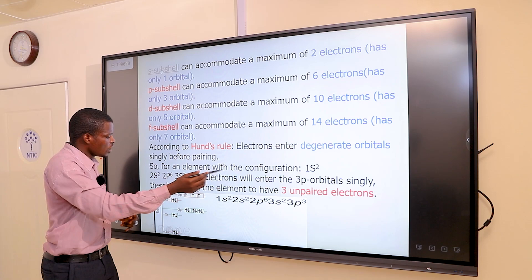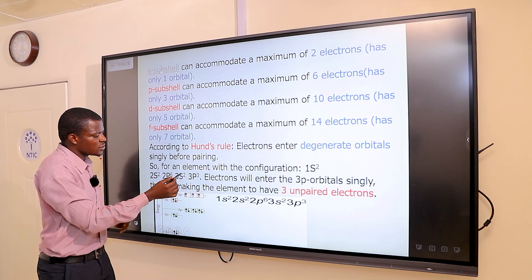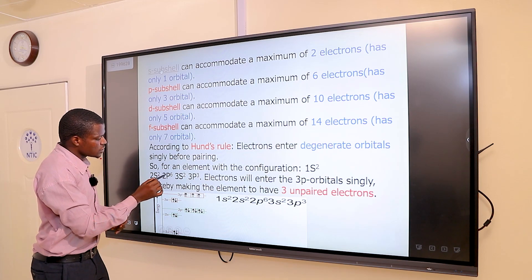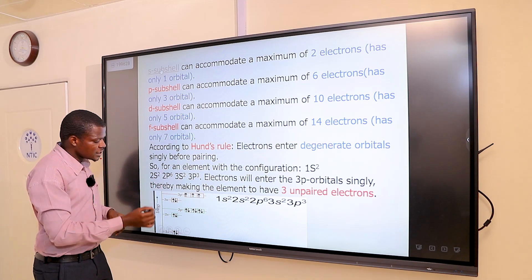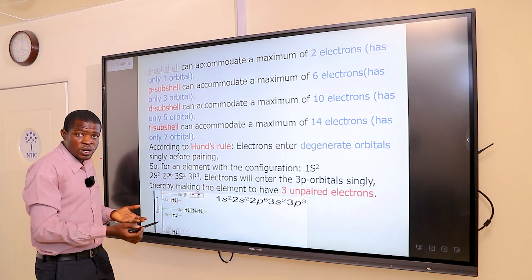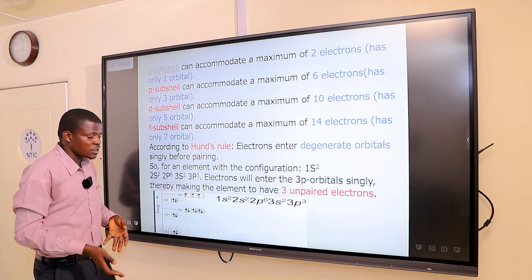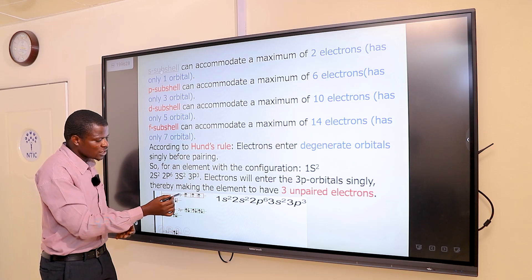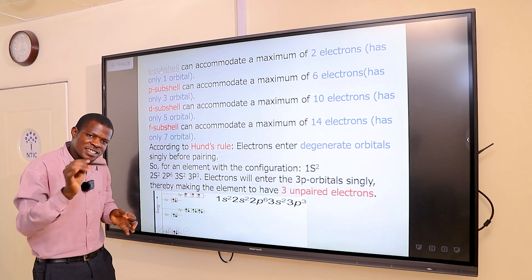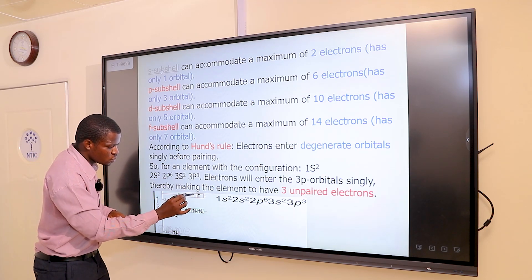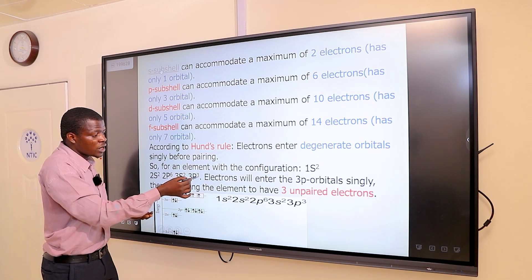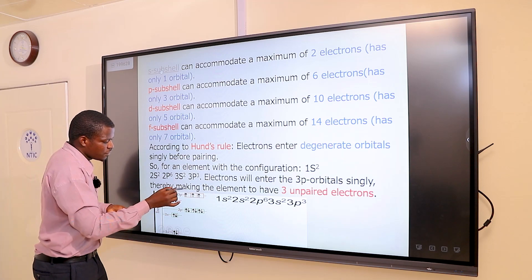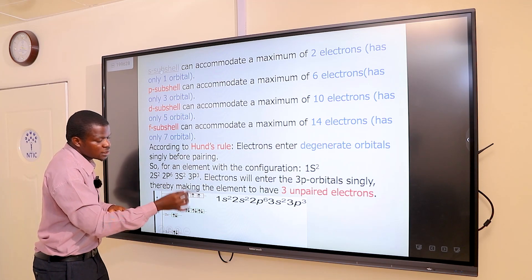Back to our question: 1s2 2s2 2p6 3s2 3p3 was provided. The 1s, 2s, and 2p orbitals are complete because they have all the required electrons. But the 3p has only three electrons, and those three electrons can be fitted in singly: 1, 2, 3. There are no more electrons to put. Therefore, how many unpaired electrons do I have? 1, 2, and 3.